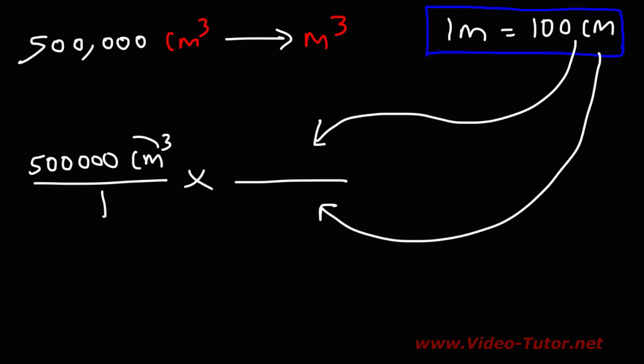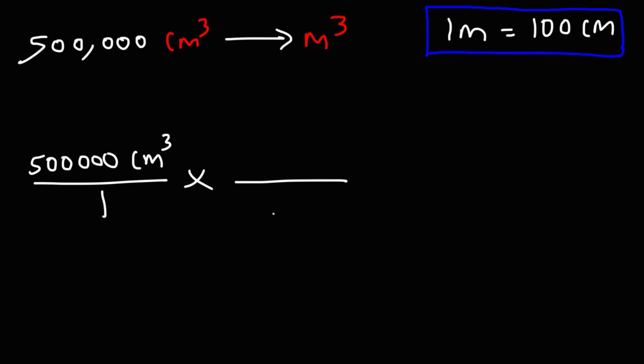Notice that we have units of centimeters on the top left. In order for that unit to cancel, we need to put centimeters on the bottom. So we're going to put 100 centimeters on the bottom of the second fraction, but we're going to put one meter on top.